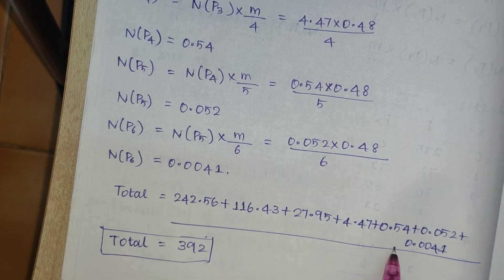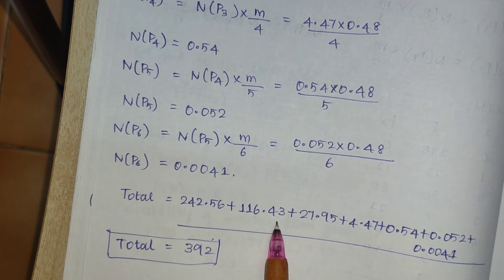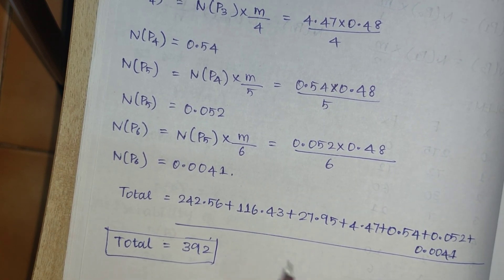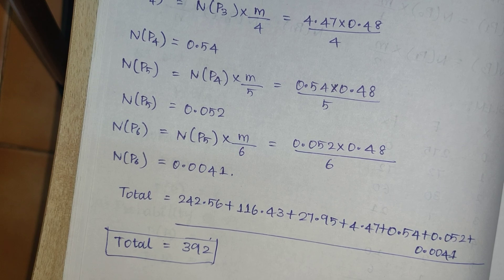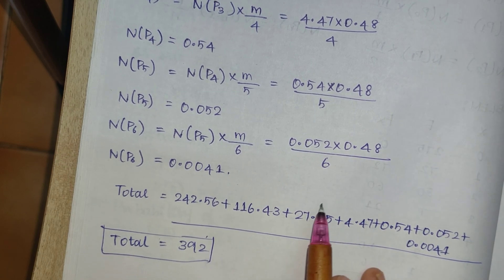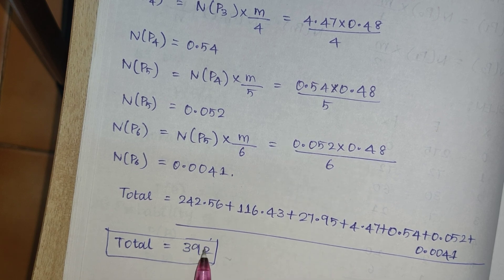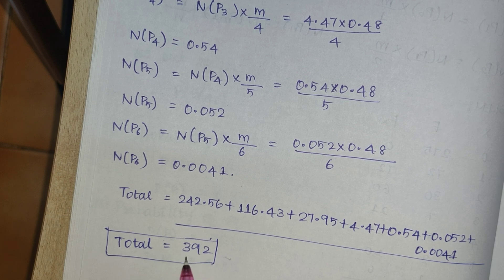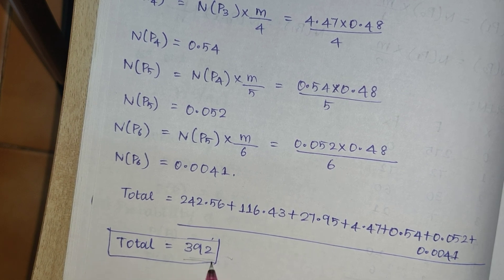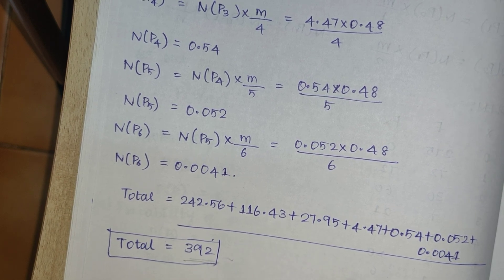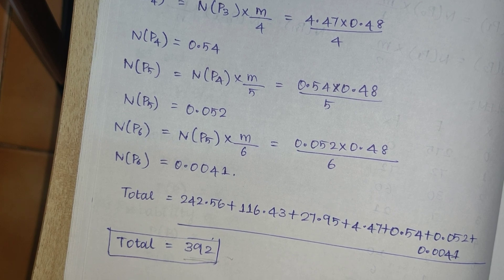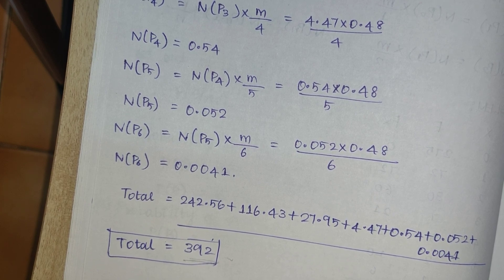We add all the computed frequency values. The summation of the fitted frequencies gives approximately 392, with some minor variations due to rounding. The total approximate value matches the original total of 392, verifying our Poisson fit.